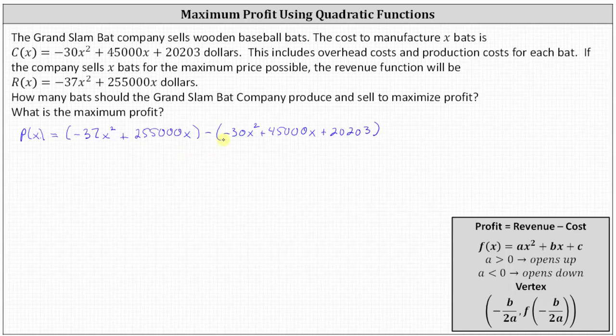And now let's go ahead and simplify. Let's remove the parentheses and then combine like terms. We have P of X equals, we can drop the first set of parentheses. We have negative 37 X squared plus 255,000 X. And now we need to subtract each term of the cost function. Minus negative 30 X squared simplifies to plus 30 X squared. Then we have minus 45,000 X and minus 20,203.